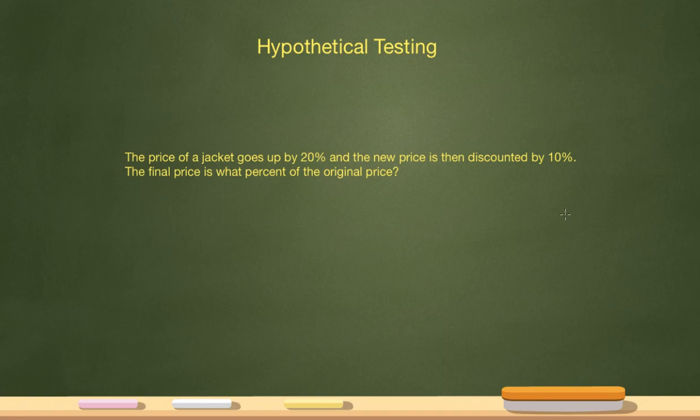Whenever I'm dealing with percents and I don't have a concrete number to work with, a hundred is my go-to number. A hundred makes everything with percents that much easier. So now if I know the price of the jacket is a hundred bucks, the price goes up by 20%. So 20% of a hundred is $20. So my new price is going to be $120.